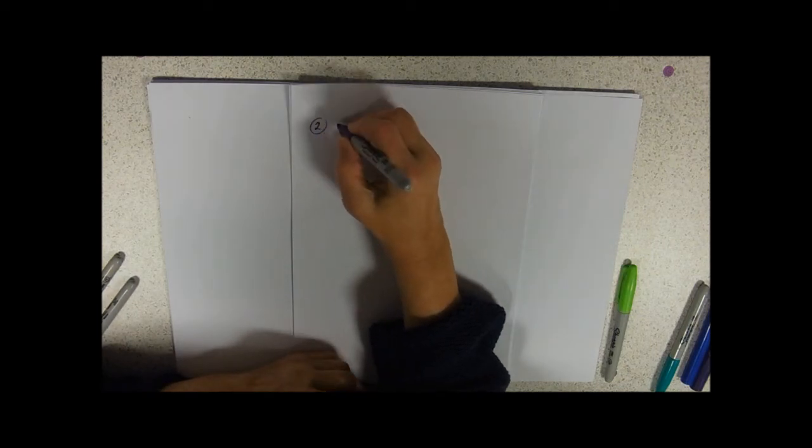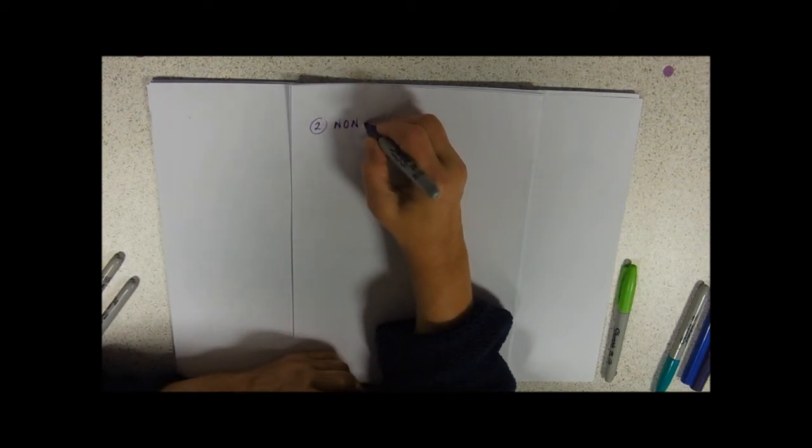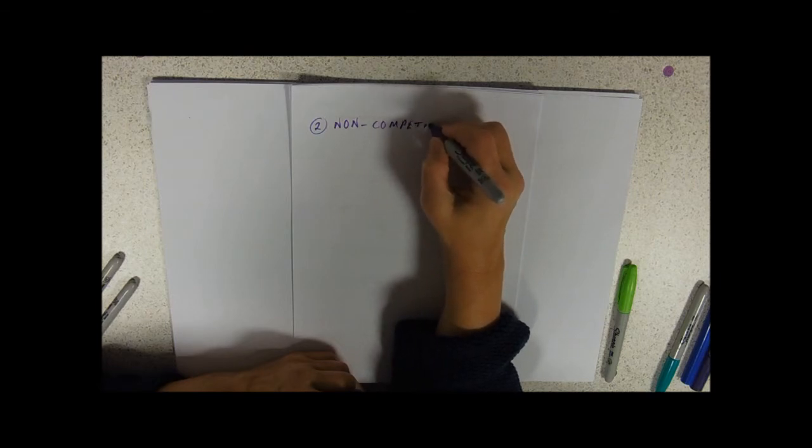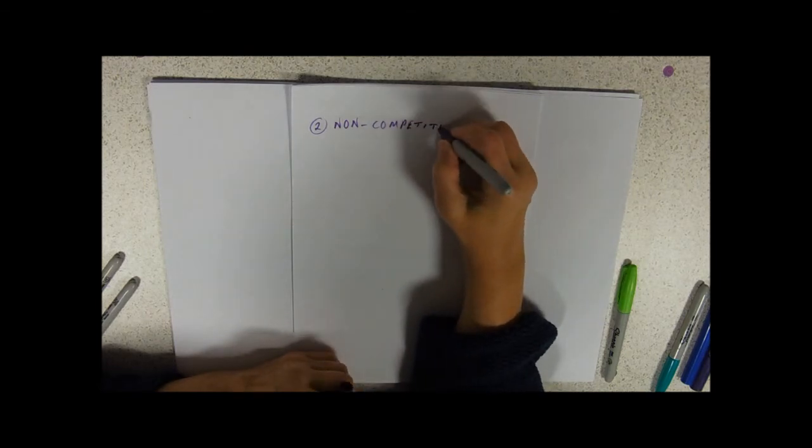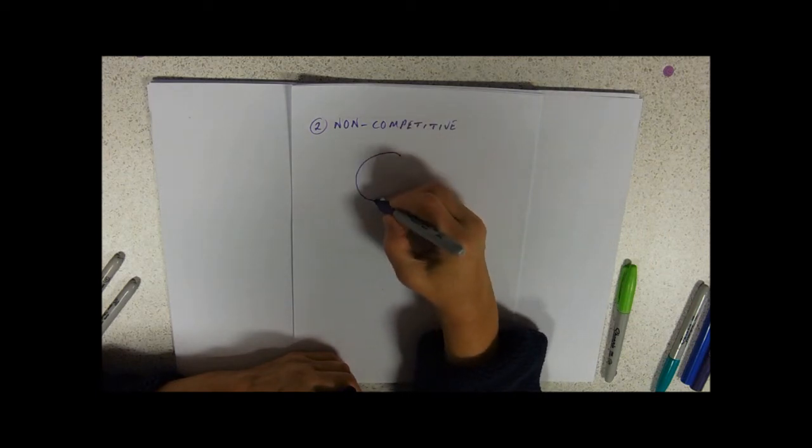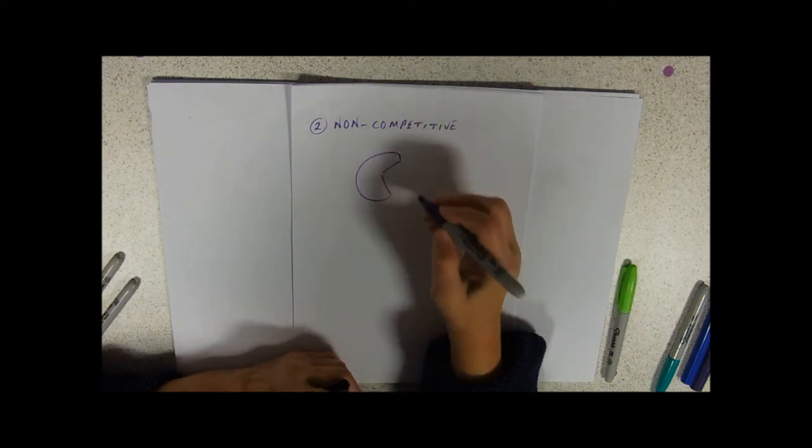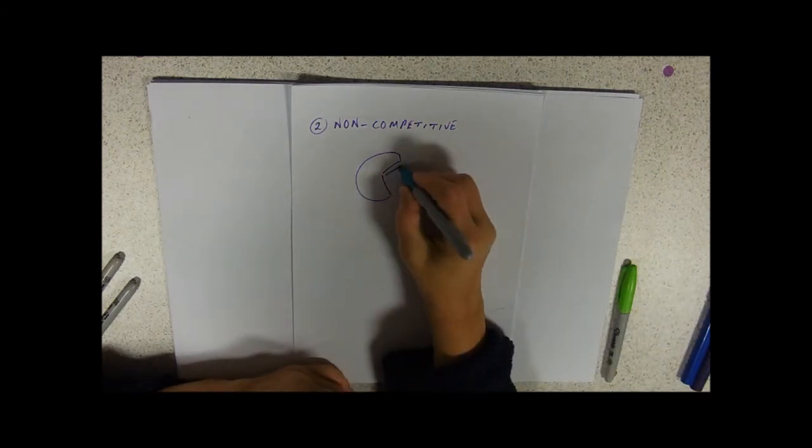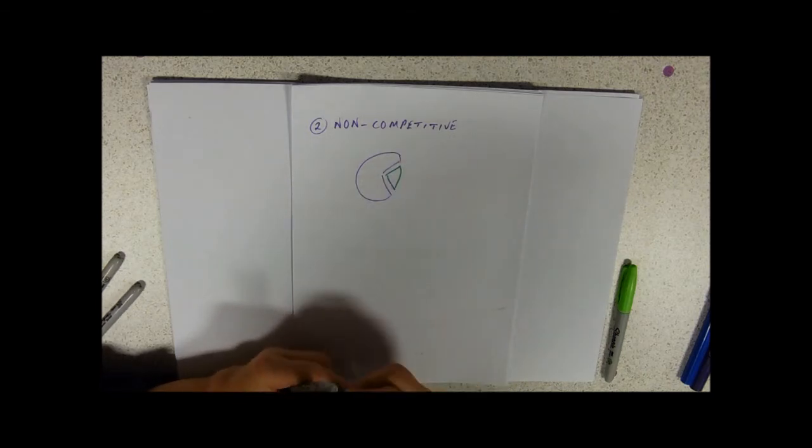The other sort is called non-competitive. So this is nothing to do with active sites. So we've got our Pac-Man. It normally fits in its substrate there to give our products.